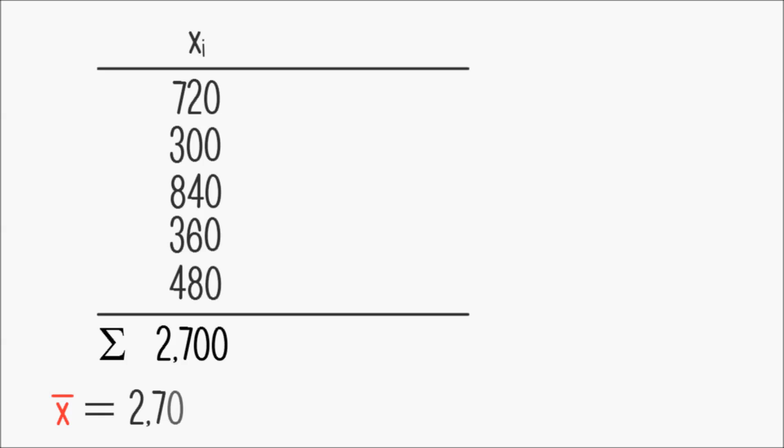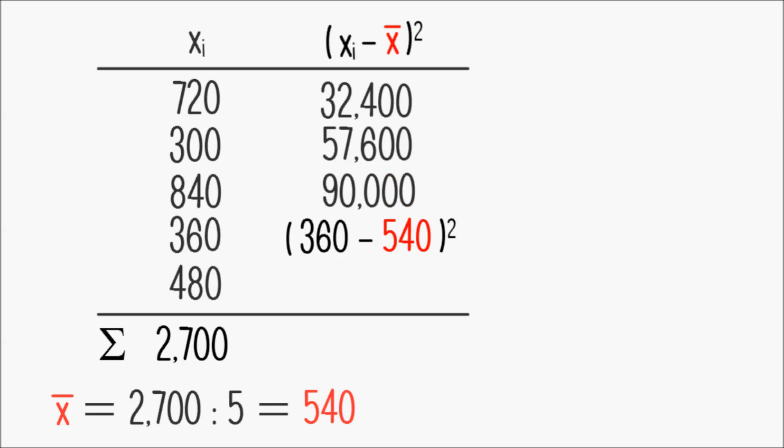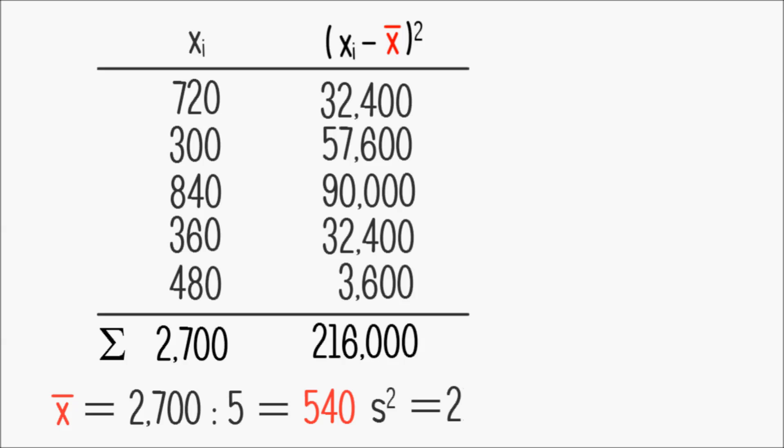The average would then be 540 minutes, obviously 9 hours times 60 minutes per hour. But variance is not 60 times 12, but 3600 times 12, which is 43200. Which is clearly a totally different order of magnitude than the data values.